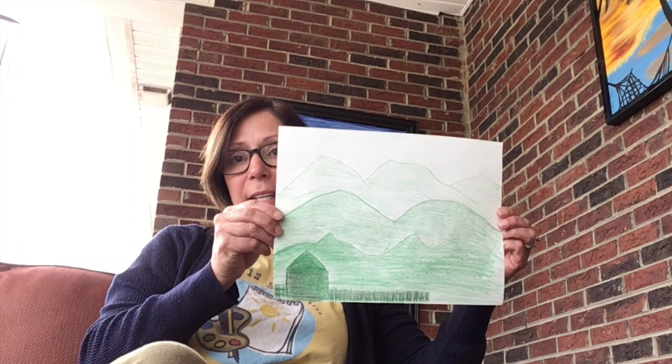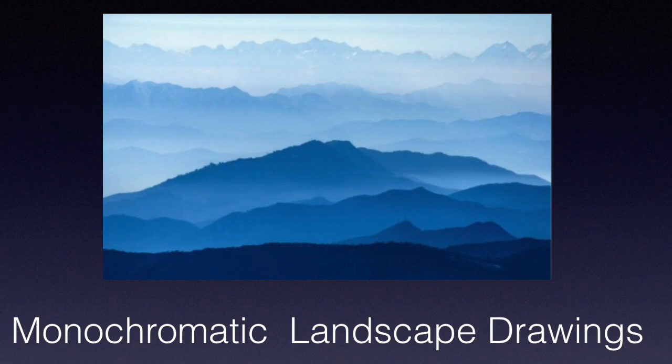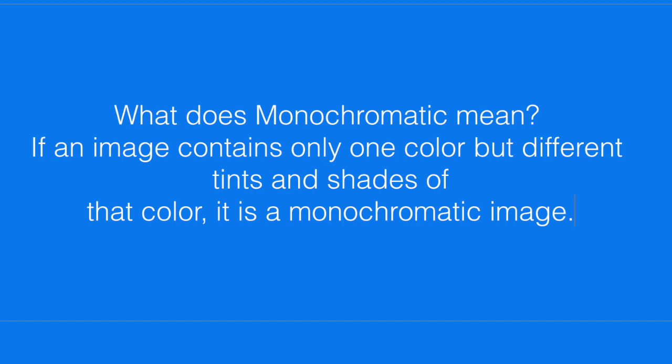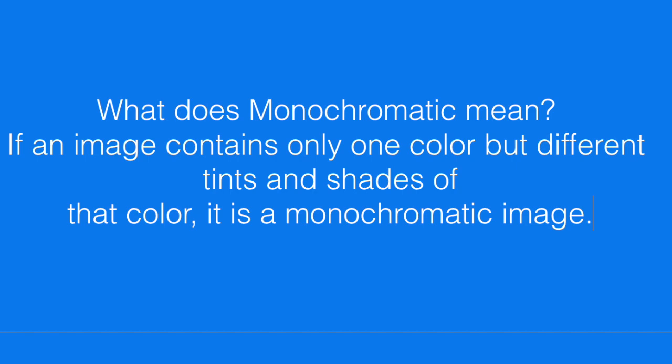Let me show you my example so you can kind of get a concept of what we're doing. So today we're going to be talking about monochromatic landscape drawings. What does monochromatic mean? Well, if an image contains only one color but different tints and shades of the color, then the image is considered a monochromatic image.